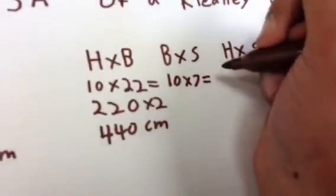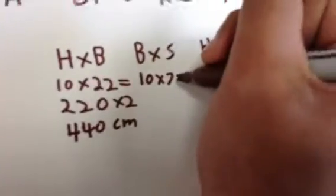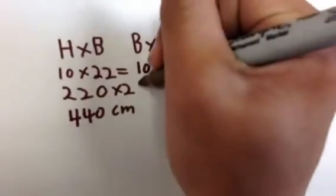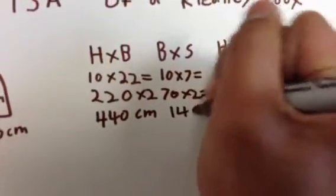And then bottom times side, we have to do 10 times 7 equals... don't mind the background, that's our teacher... 70 times 2 equals 140.